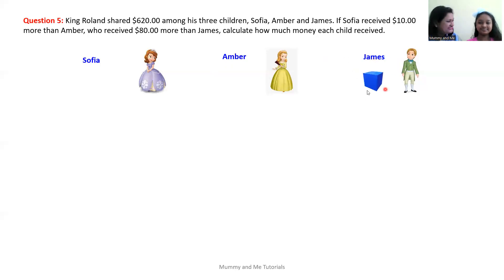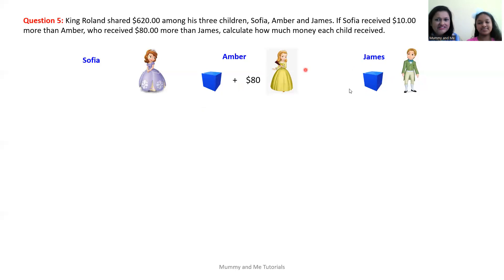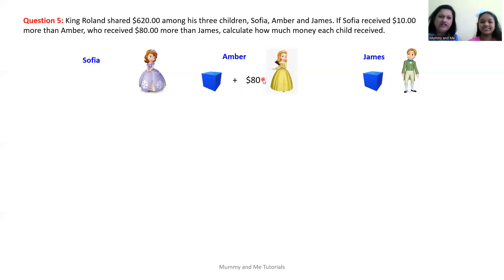So James received how much money? An unknown amount — we don't know how much. Let's give him a box, a blue box. And how much money did Amber receive? Amber received $80 more than James. So if James received a box, Amber received $80 more than the box — box plus an additional $80.